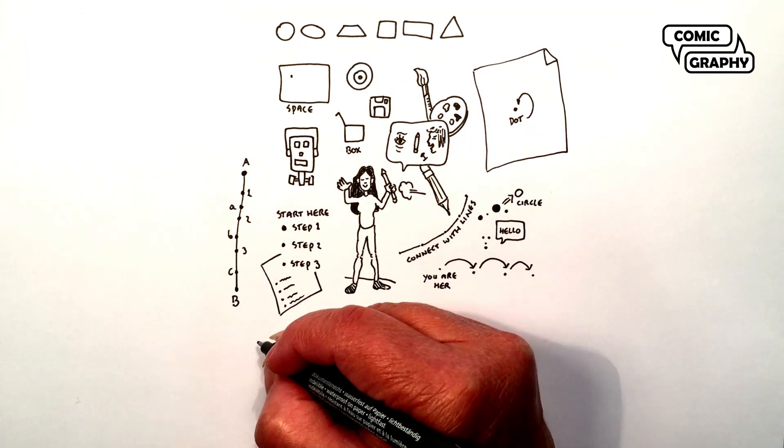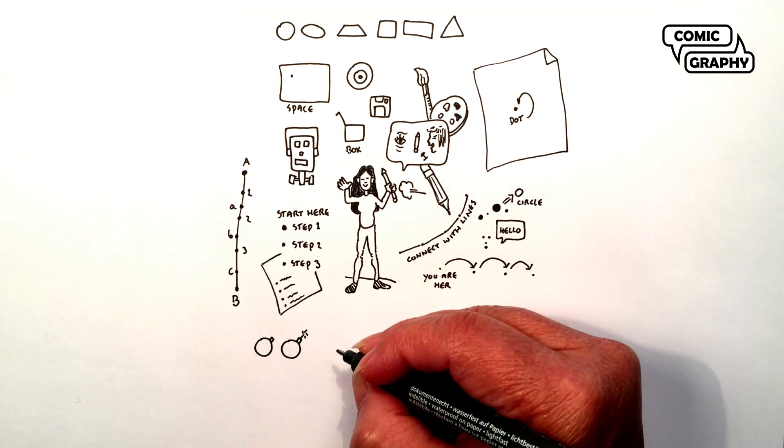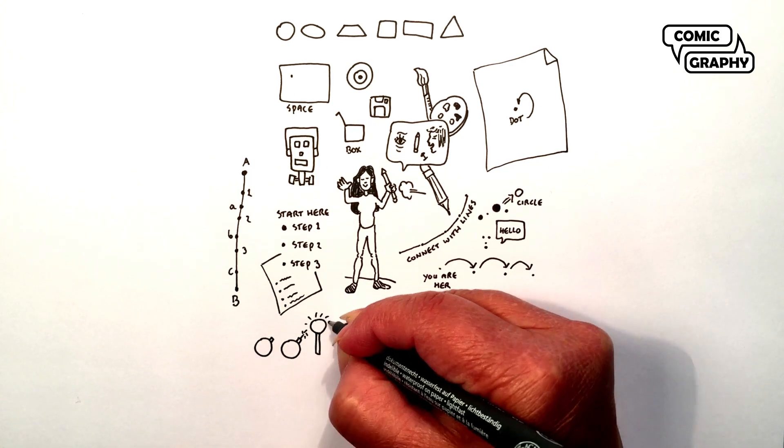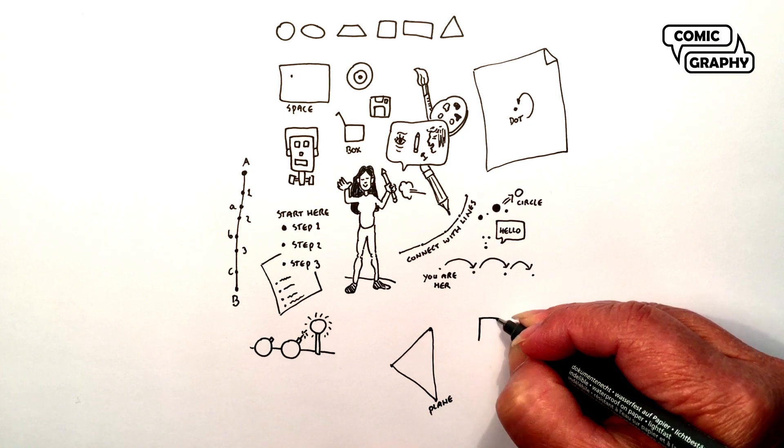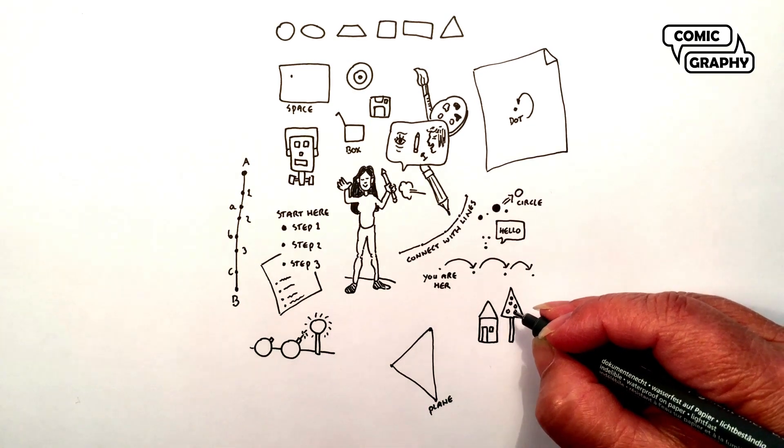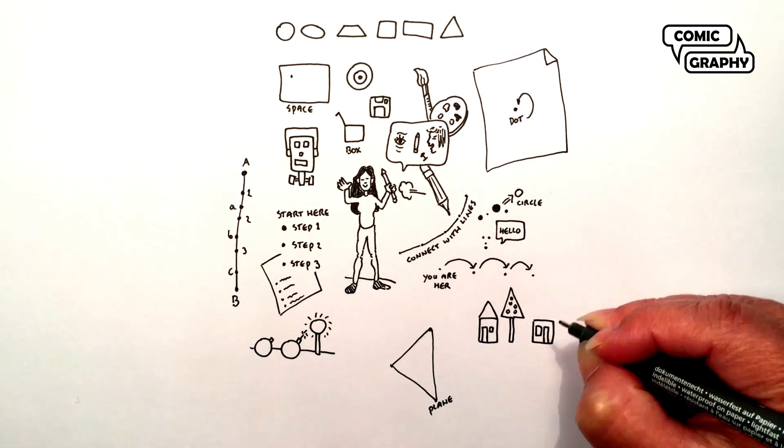Now try to connect all these basic shapes with each other. A circle and a rectangle can be a fruit or bomb. It can even be a lamppost. The combinations are endless. Make a whole street view using these basic shapes.